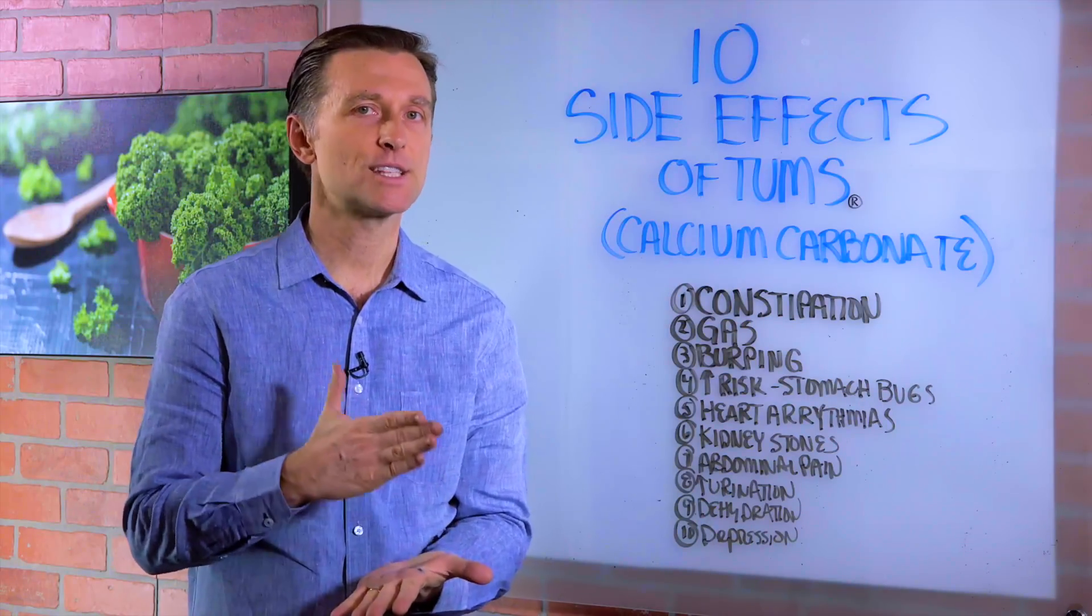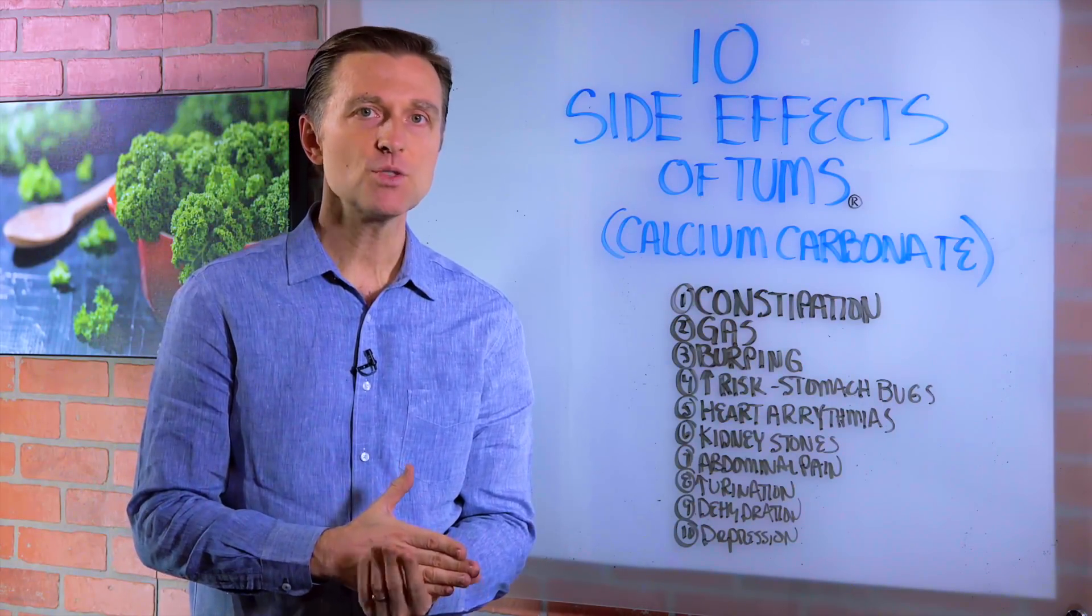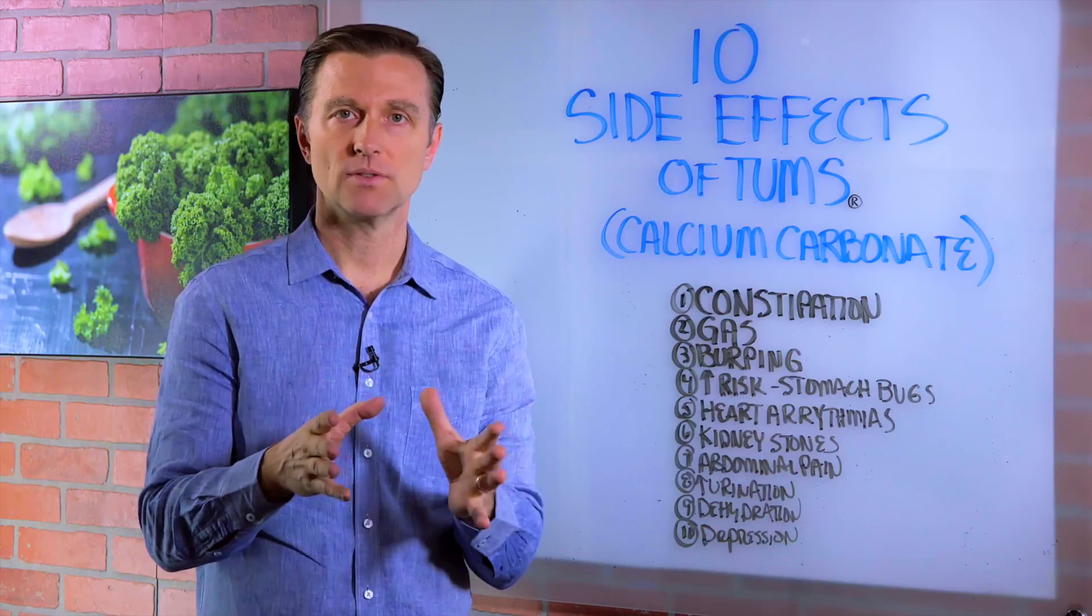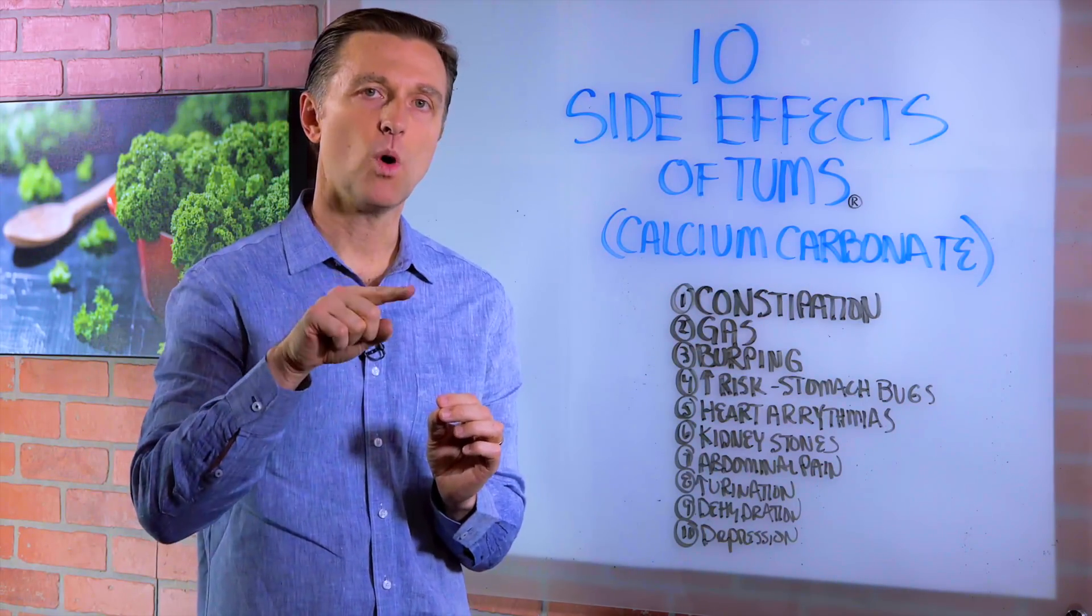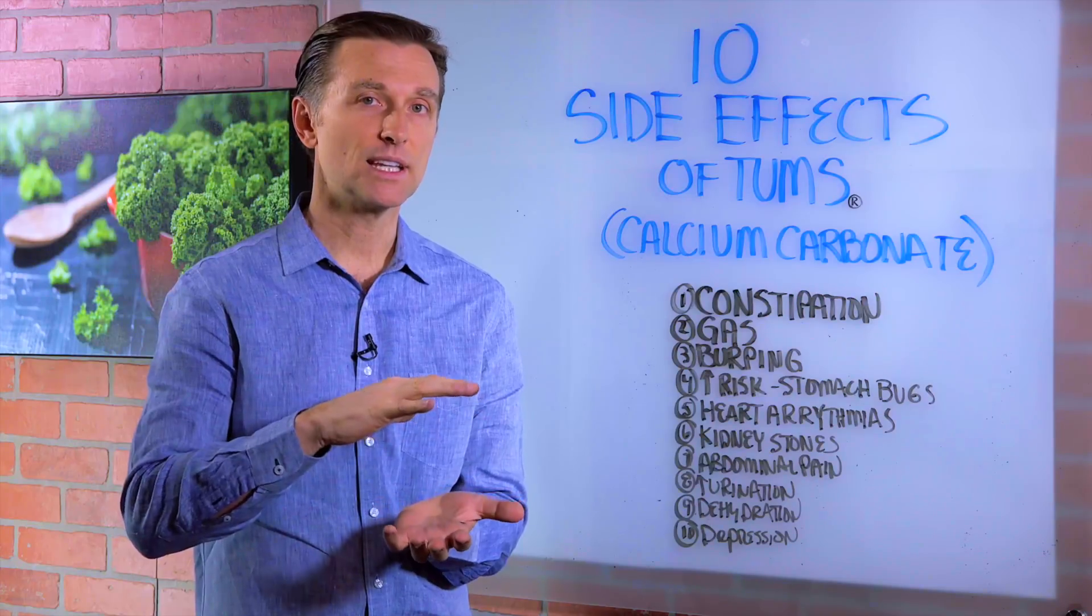I had severe heartburn and acid reflux. Here's what you need to know about acid reflux and heartburn. Normally the stomach pH should be between 1 and 3. That's really, really acidic. It's like battery acid acidic.